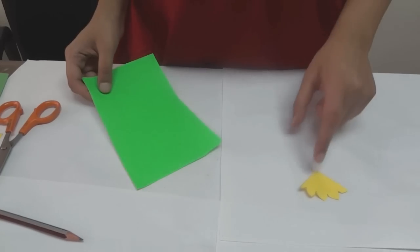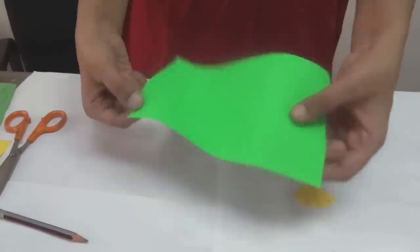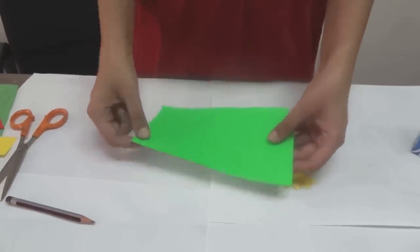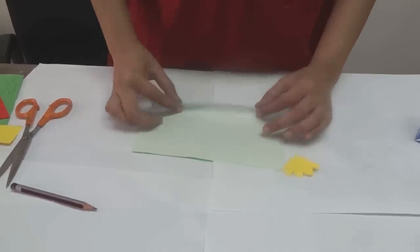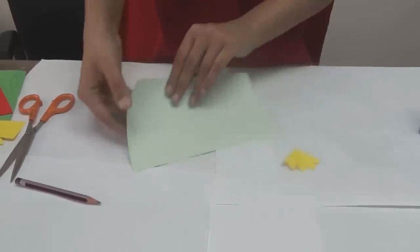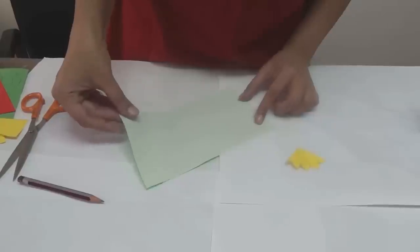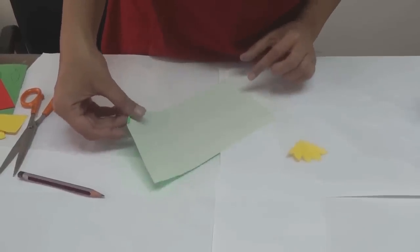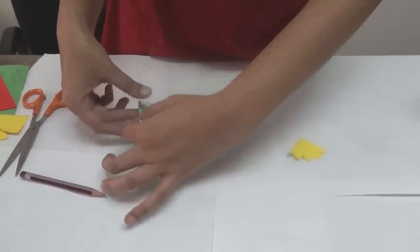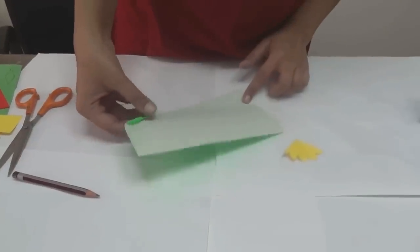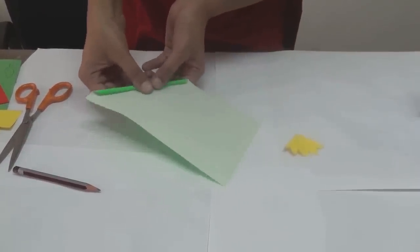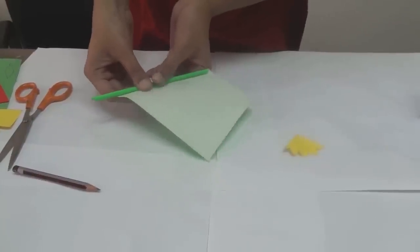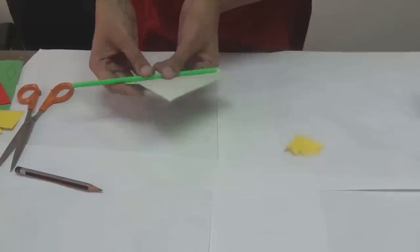Now we have to make the stem of the flower. Take a green fluorescent paper. Cut it in the shape of a rectangle. Now we have to roll this paper to make the stem. It will be difficult if we roll it like this. So it is better we will start from the corner. Just start rolling the corner, lightly with your fingers and your thumb. Just roll it as finely as possible.